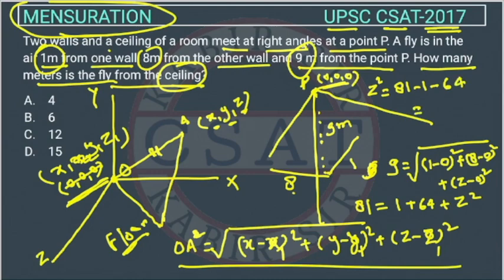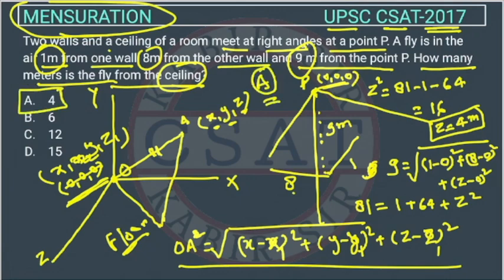When we will solve it, what we will get? We will get 16. So z is 4. Z is 4 meters. So the answer of this question is option A.